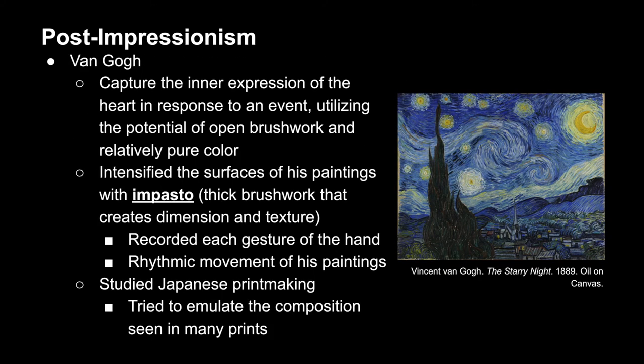Van Gogh sought to capture the inner expression of the heart as it responds to different events. In doing so, he utilized the potential of open brushwork and relatively pure colors. He also sought to intensify the surface of his paintings by using a technique called impasto, which utilizes very thick brushwork to create dimension and texture on the surface of a painting — allowing the viewer to see each gesture that the artist made to create each mark. It also fosters a strong sense of rhythmic movement throughout all of his paintings, which is particularly evident in the Starry Night. Like several other artists discussed, Van Gogh studied and applied techniques from Japanese printmaking, primarily in reference to composition.